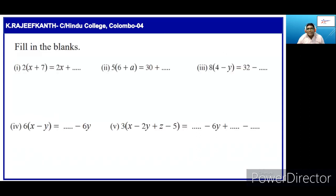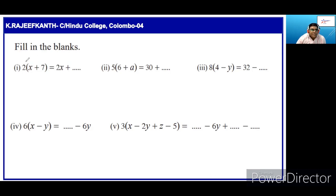Here, we have to fill in the blanks. The first one: 2 into x plus 7. So we know we have to multiply x by 2. Here, they have already multiplied 2 by x, so 2 times x is 2x. Then, we should multiply 7 by 2, so 2 times 7 is 14.